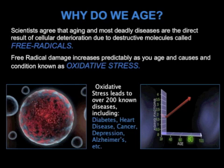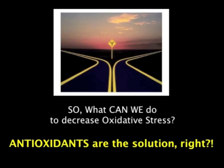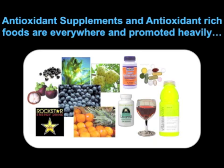So what can we do about oxidative stress? The prevailing thought process is antioxidants. Antioxidants are the solution — at least what we have been taught. The question is, what variety are we talking about? Until recently, we did not know that there is a direct antioxidant and an indirect antioxidant. Antioxidant supplements and antioxidant-rich foods are everywhere and they're promoted heavily.